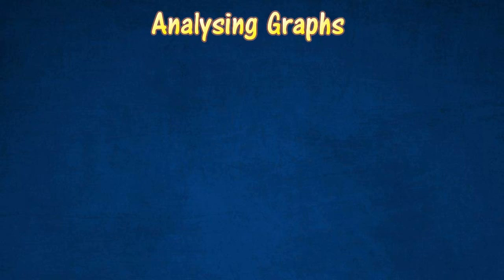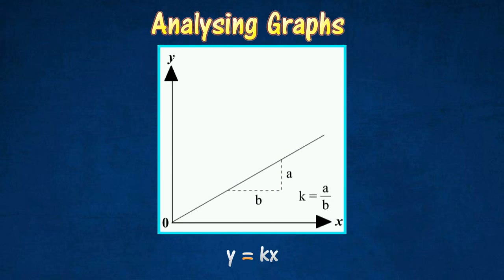Analyzing the graphs. In this graph, y is directly proportional to x. The equation is y equals kx, where k is the gradient or slope of the graph.